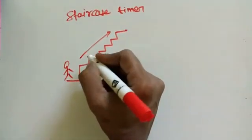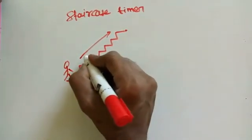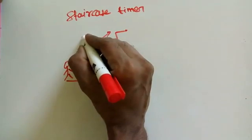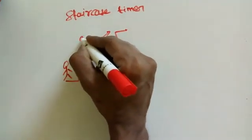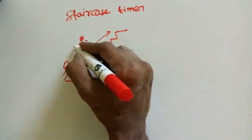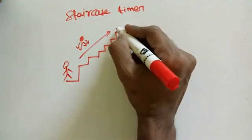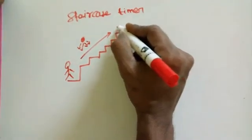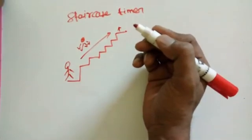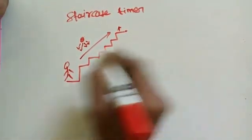That's why we make a staircase timer for staircase purposes. Suppose he wants light - the lamp on here, this lamp going to glow up until this person reaches this level. So this is the purpose of putting a staircase timer.